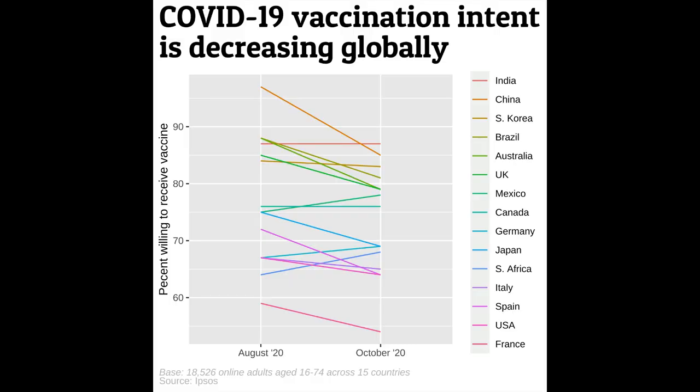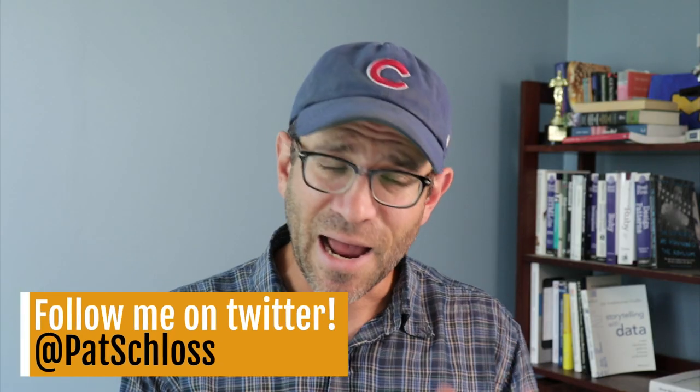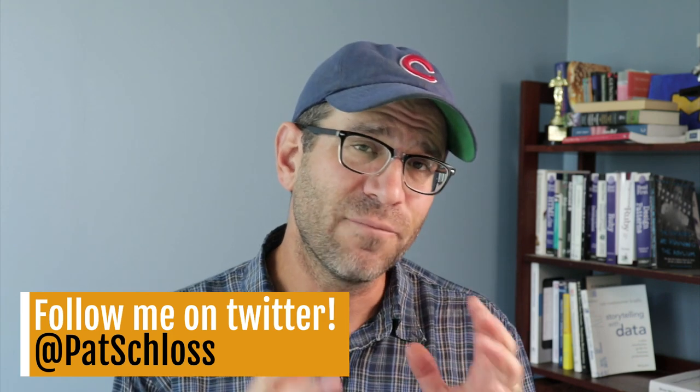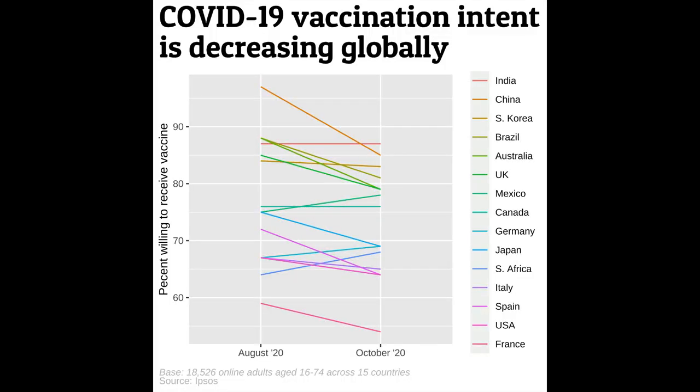Hey folks, I'm in the process of trying to make this slope plot look better. One of the things I noticed that would perhaps help the visual interpretation of the data is trying to get the countries to be in the order of whether or not people were willing to receive the vaccine.